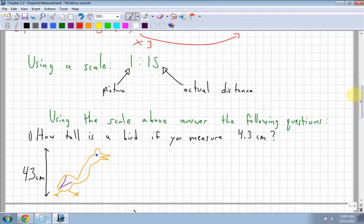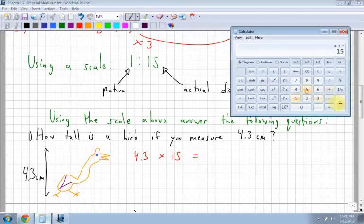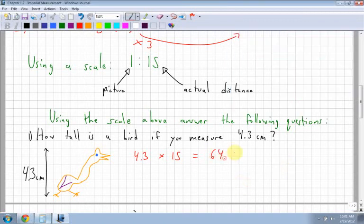Now I'm going to look at how to use a scale and how to use that scale to answer a question. Here I have a scale of 1 to 15. The first number always represents your picture or what the measurement is on your picture. The second number represents the actual distance or the actual size in the real world. Using the scale above, 1 to 15, I'm going to answer this question. How tall is this bird if you measure 4.3 centimeters? I know that the actual distance is 1 to 15. For every 1 centimeter I measure on the bird, it equals 15 centimeters in the real world. I'm going to take 4.3 and multiply it by my scale factor of 15. So I have 4.3 times 15, which is 64.5 centimeters.